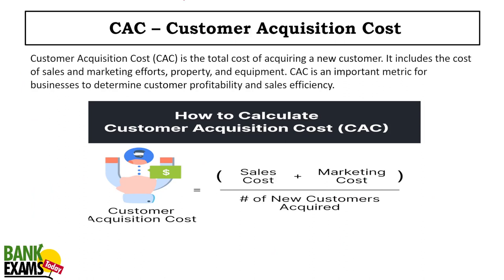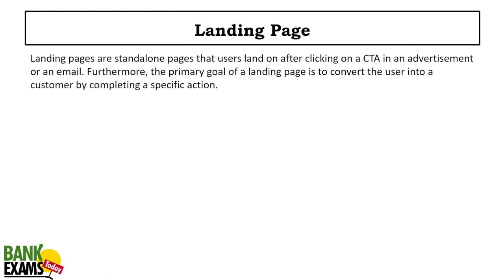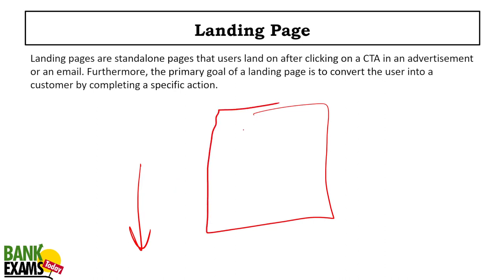CAC — Customer Acquisition Cost — is the cost of acquiring a new customer. To acquire one customer, how much money do you need to spend? That is the customer acquisition cost. Landing page: for example, the link in the description takes you to the course description page where you can read details, see the price, and find the WhatsApp number.